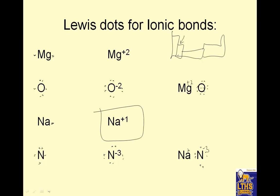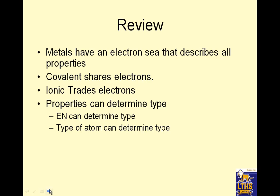Review: Metals have an electron sea that describes all of their properties. Covalent shares electrons. Ionic trades electrons. Properties can determine type. I think I might actually be able to podcast this happily again. I guess I get to talk to my formula unit song again. Toodles!